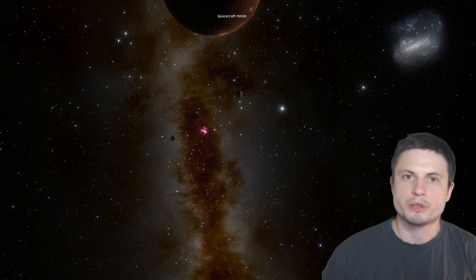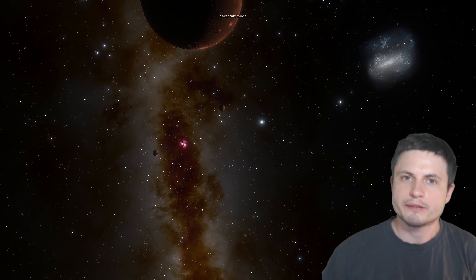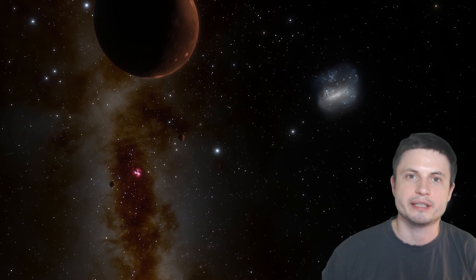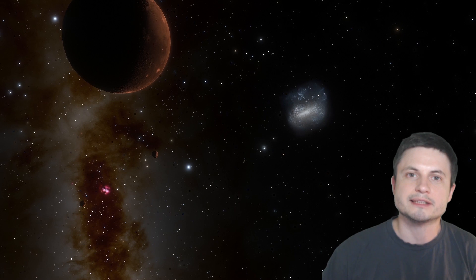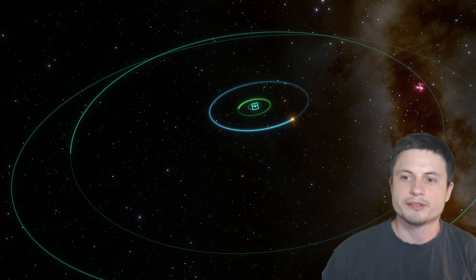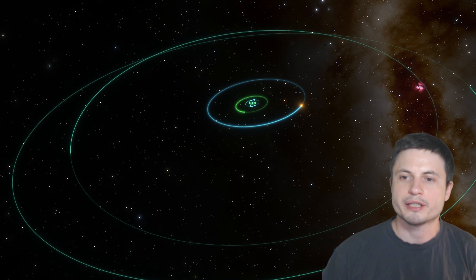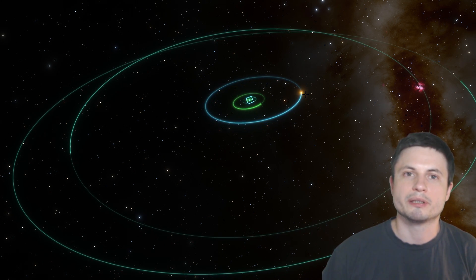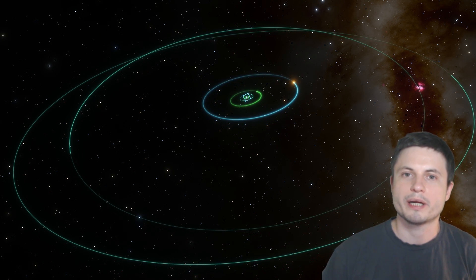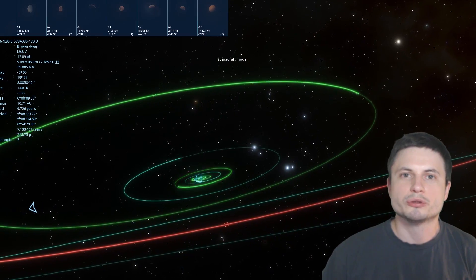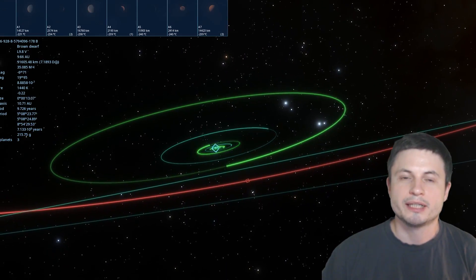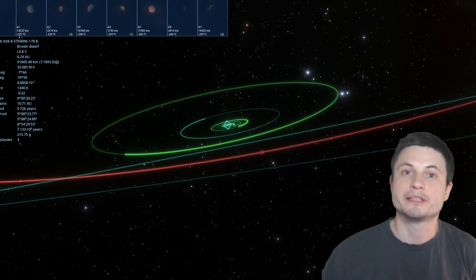But anyway, what we really want to talk about is what if all of these objects, and specifically I guess the brown dwarf itself, collided with the black hole that's in the system. Because right now if you look at the system, the objects in the system all orbit around the central black hole that's right there in the middle. With the black hole itself possessing several planets as well, suggesting that it's a really complex system.